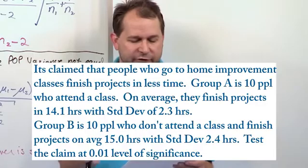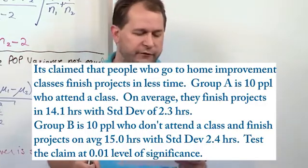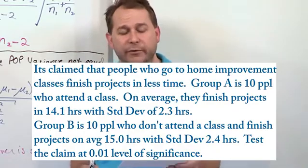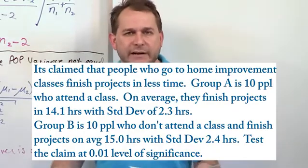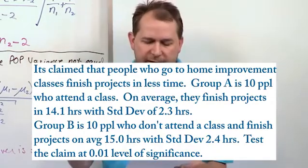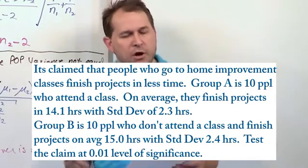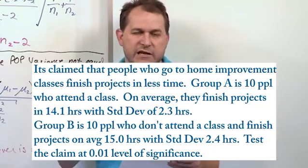On average, it takes an average of 14.1 hours to finish their home improvement project with a standard deviation of 2.3 hours. So these are the people that took the class, completed the class, went home, did their project, took an average of 14.1 hours with a standard deviation of 2.3 hours.